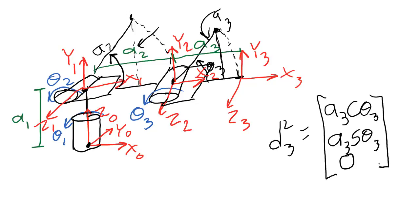Since we have each of the displacement vectors from the base frame all the way to the end effector frame, we're done with this example.